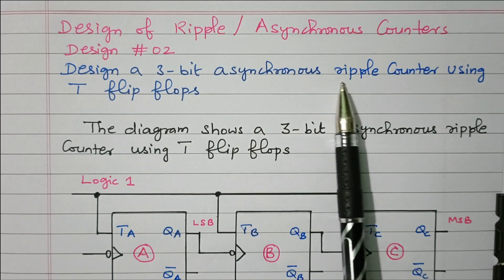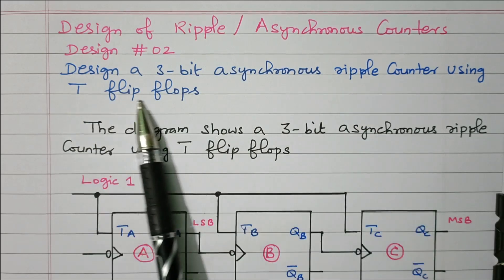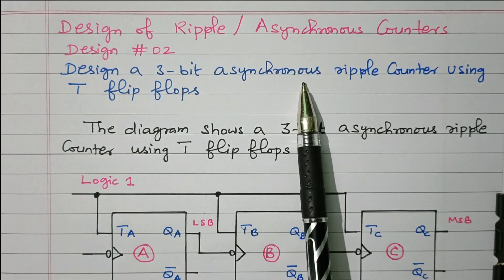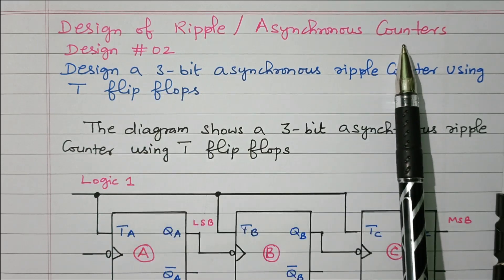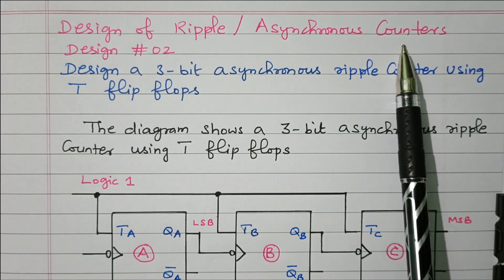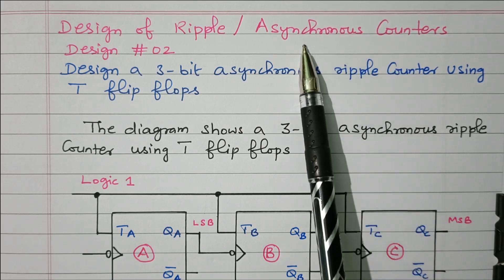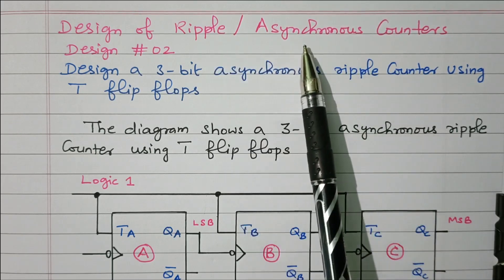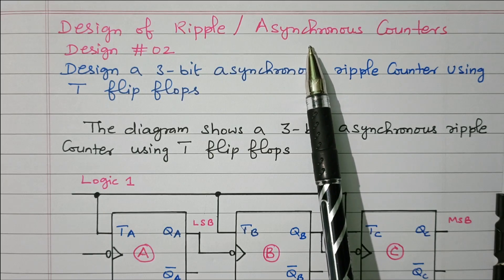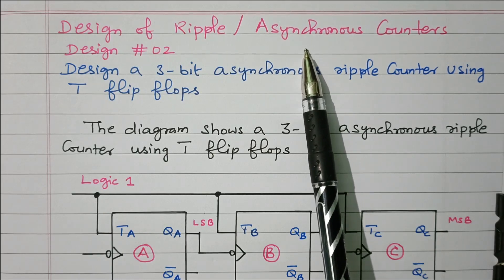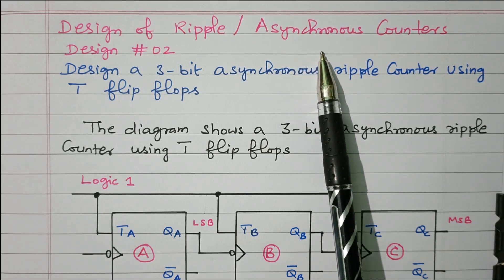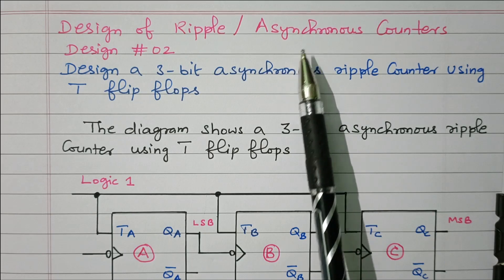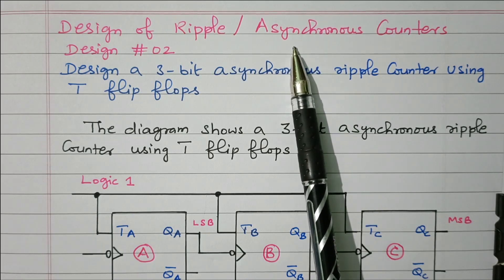Design a 3-bit asynchronous ripple counter using T flip-flop. A counter counts from zero to N or N to zero, and it is made up of flip-flops. In an asynchronous or ripple counter, the first flip-flop receives the clock pulse; the output of one flip-flop is given as the clock signal to the next flip-flop. In a synchronous counter, all flip-flops receive the same clock pulse.